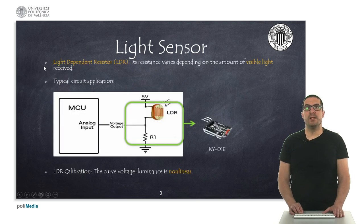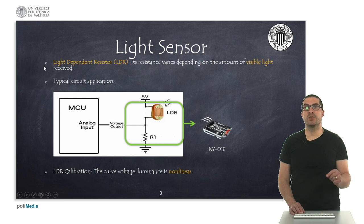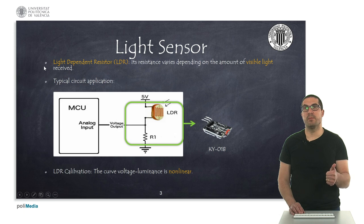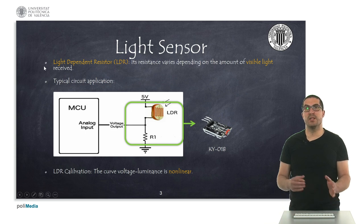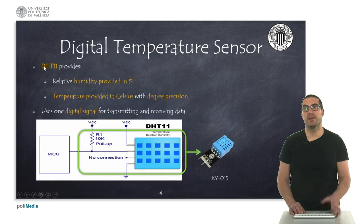The light dependent resistor, also known as LDR, is a resistance that varies depending on the amount of visible light received. We typically use this sensor to measure the light in our home or in a greenhouse. We typically need not just the resistance provided by the LDR, but also another resistance so it acts as a voltage divider, as you can see here in the circuit application. Here you can see also one of the most known modules, the KEY-AT module, which already provides all the necessary electronics and three pins for power supply, ground, and the signal itself. It may require calibration because the relation between voltage and luminance is non-linear, but this depends on your application. If you really want to measure in lux, you need to calibrate it.